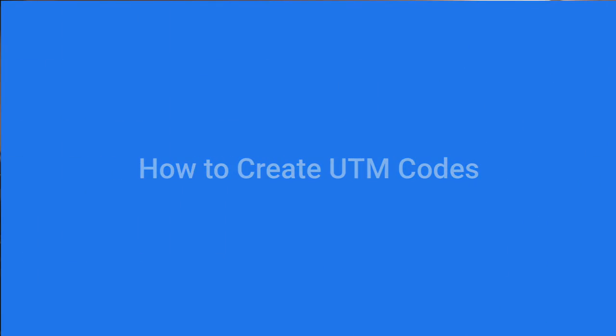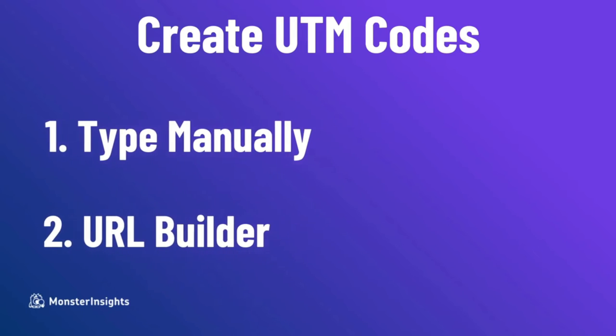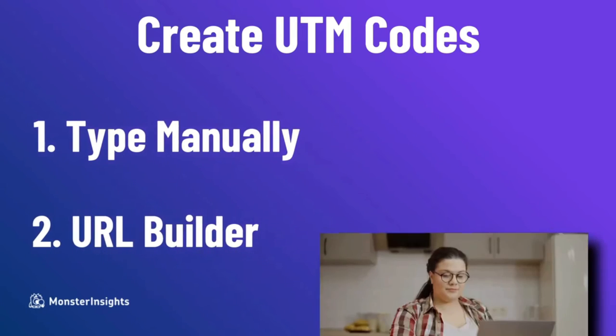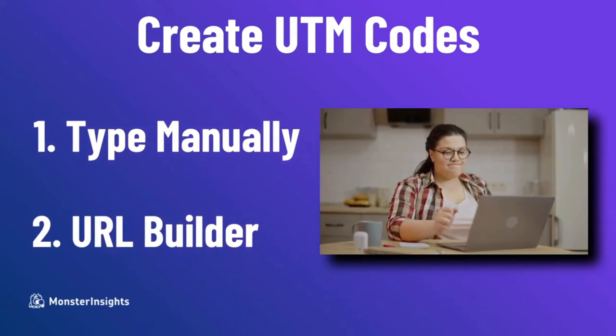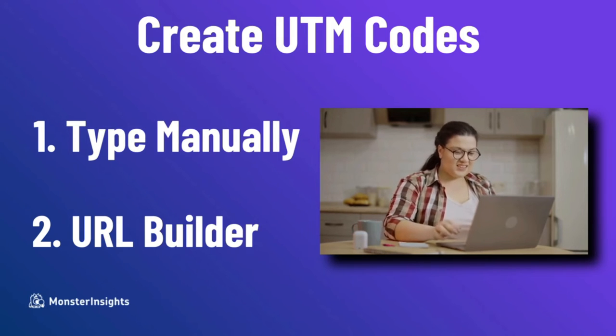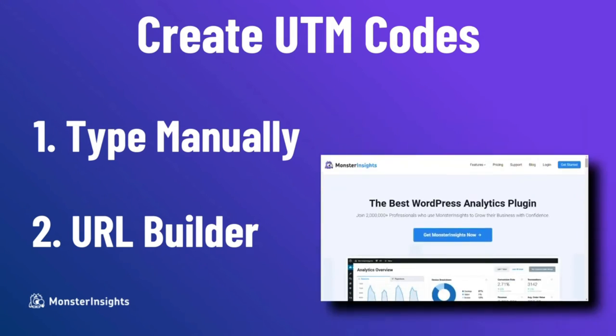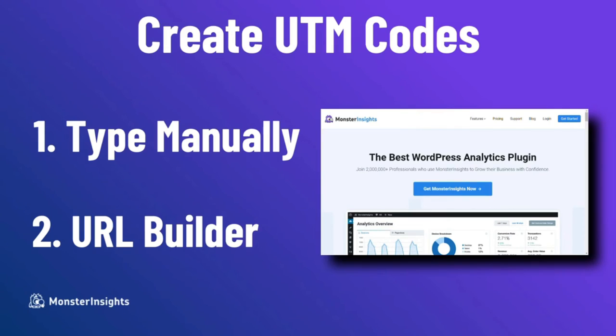There are two ways to create UTM codes for Google Analytics: you can either type them in manually or use a URL Builder tool. Creating them manually is risky — UTM codes can get very lengthy and there's a chance you'll make a mistake, causing your data to not be organized correctly. So it's much easier to create a UTM tag using a URL Builder tool in WordPress, like MonsterInsights.